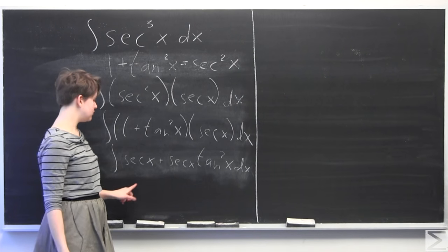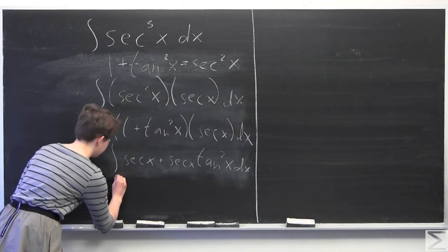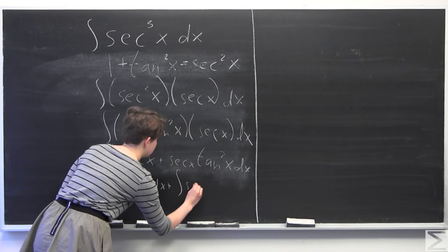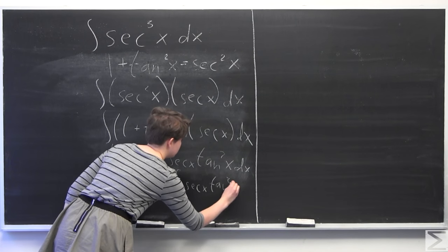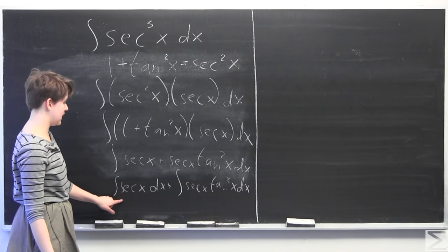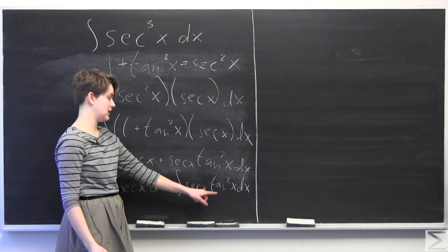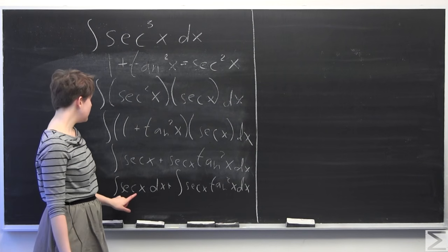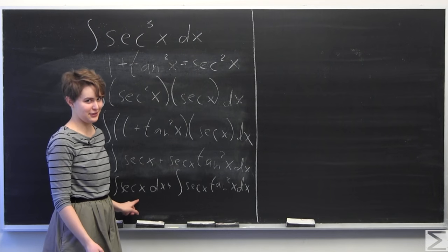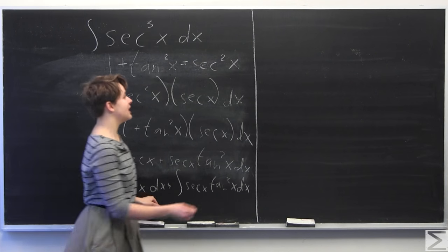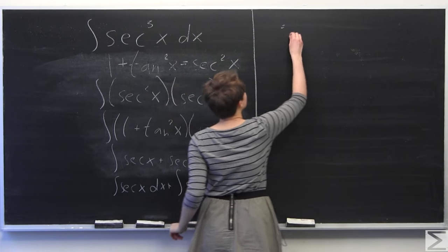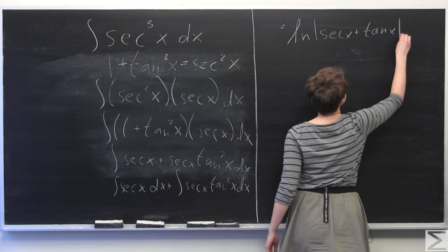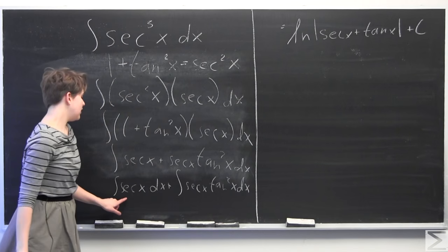Now we can use the linearity of the integral to distribute the integral over both terms, since we're adding. So we have the integral of secant of x dx, and the integral of secant of x times tangent squared of x dx. We know what the integral of secant of x is — it is a known fact that the integral of secant of x equals ln of the absolute value of secant x plus tangent of x, plus a constant.